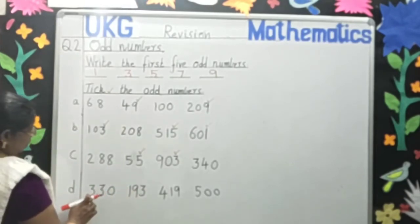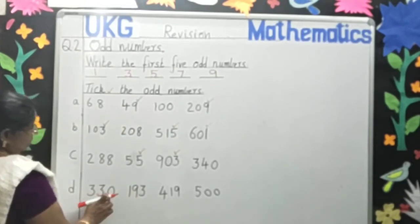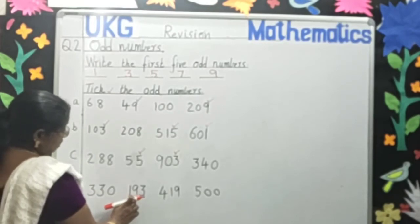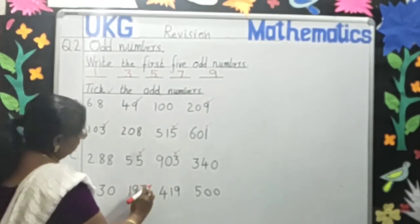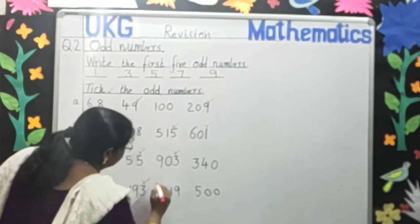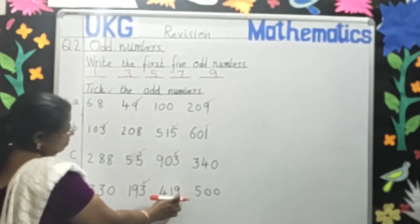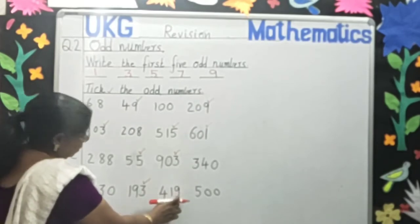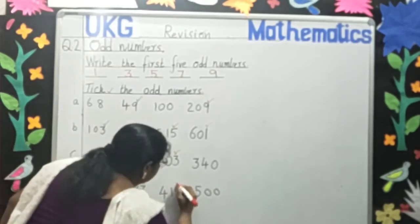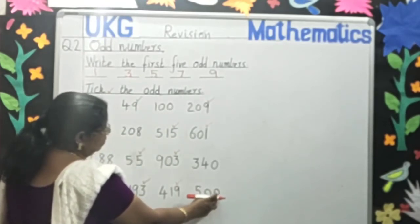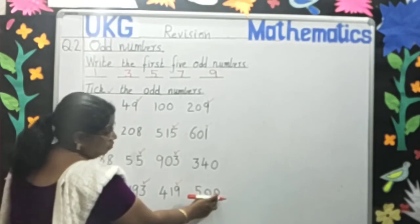Three hundred and thirty. Zero is the odd number? No. One hundred and ninety-three. Three is the odd number? Yes, put the tick. Four hundred and nineteen. Nine is the odd number? Yes, put the tick. Five hundred. Zero is the last number. Zero is the odd number? No.